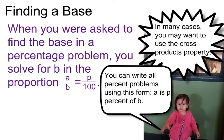In many cases, you may want to use the cross-products property. You can write all percentage problems using the form A is P percent of B. And that can help you write the correct proportion with the unknown variable, which is either A, B, or P in a percent problem.